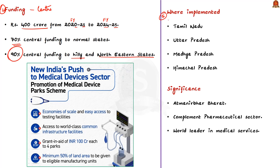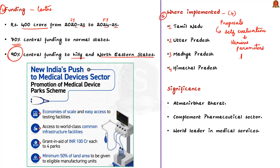The union government has given principal approval for the scheme to be implemented in four states: Tamil Nadu, Madhya Pradesh, Uttar Pradesh, and Himachal Pradesh. These were not selected randomly — the union government received proposals from around 16 states and evaluated them based on parameters like utility charges, land lease rate, ease of doing business ranking, and availability of technical manpower. This point on competitive federalism can be used in mains examinations.